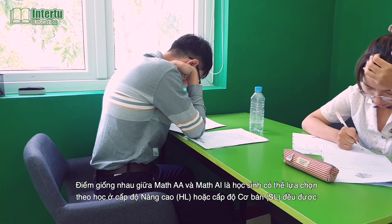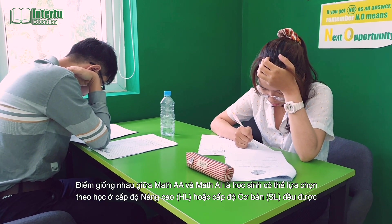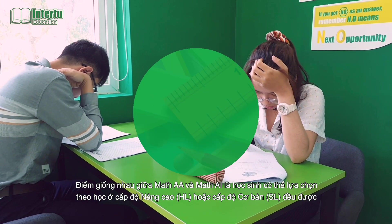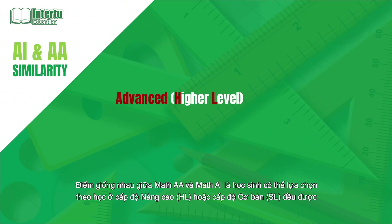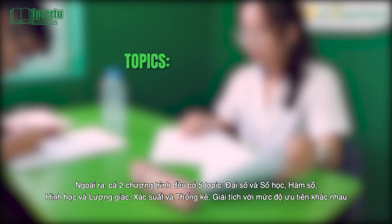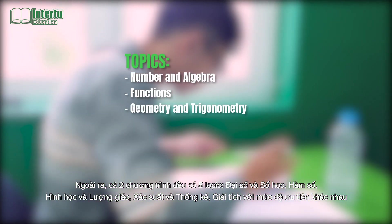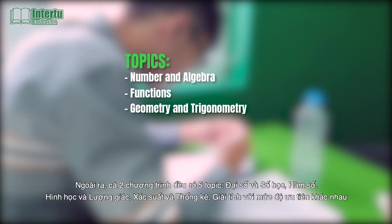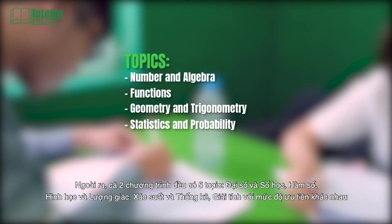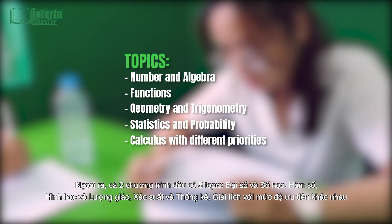The similarity between Math AA and Math AI is that students can choose to study either the advanced HL or basic SL levels. In addition, both have five topics: number and algebra, functions, geometry and trigonometry, statistics and probability, and calculus — with different priorities.